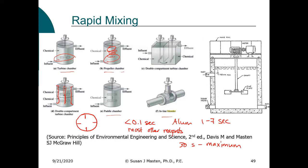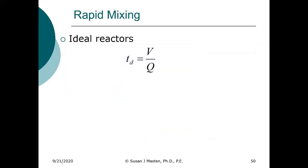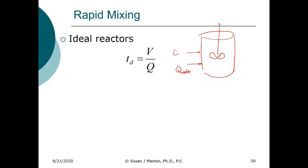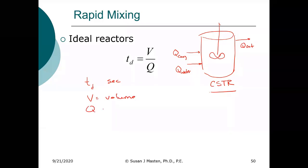Baffles prevent vortexing and improve mixing. Rarely will you see more than four baffles. For the ideal reactor, we use the detention time equation. A rapid mix basin is best modeled as a CSTR, because we have a continual flow in of water and coagulant and a continual flow out. Detention time will typically be in seconds for rapid mix, though other reactors use minutes or hours depending on reaction time. V is volume and Q is flow rate.